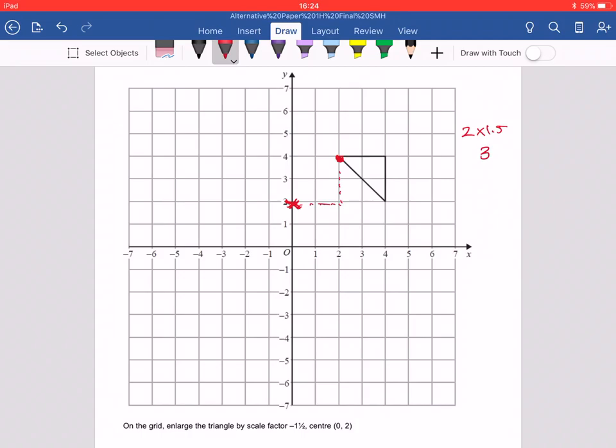But because this is a negative scale factor, we go in the opposite direction. So instead of going forward by 3 and up by 3, I'm going to go back by 3 and down by 3. So this point here is now this point here. So this point over here has now become this point over here. Is that right? Yeah. Yeah. And then I'll do the same with all the other points.